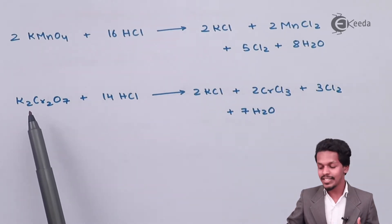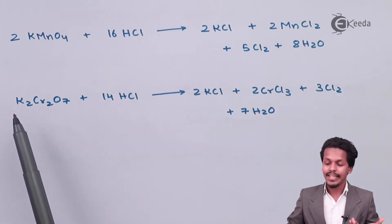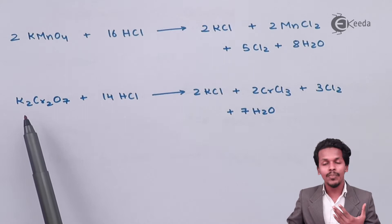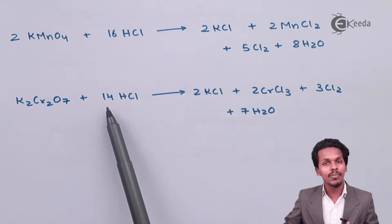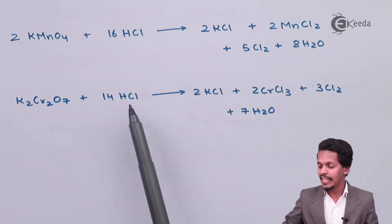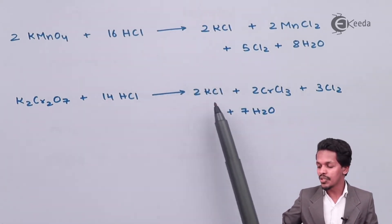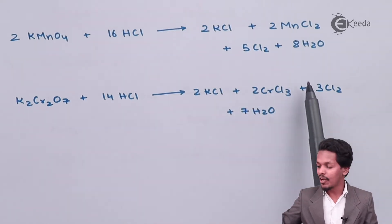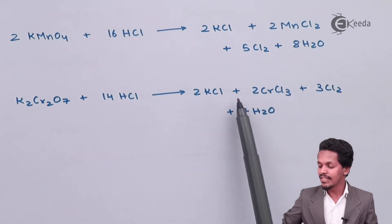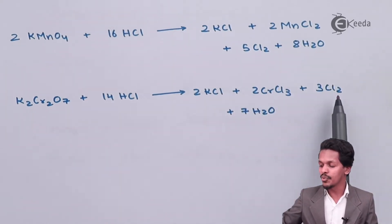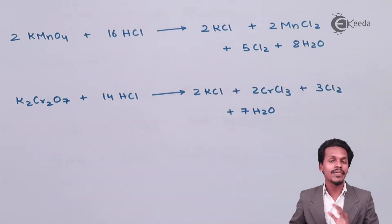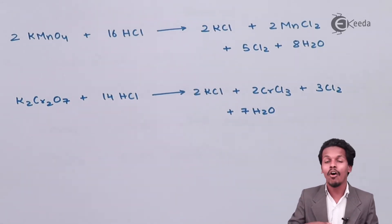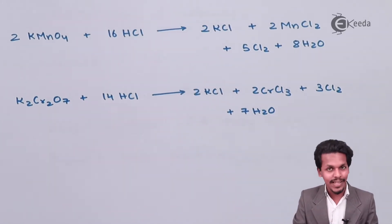The next oxidizing agent is K2Cr2O7, that is potassium dichromate. Whenever potassium dichromate is treated with 14 moles of HCl, we get 2 moles of KCl along with chromium chloride, 3 moles of Cl2, and 7 moles of H2O. So again this is a method where we can obtain Cl2 by oxidizing HCl.